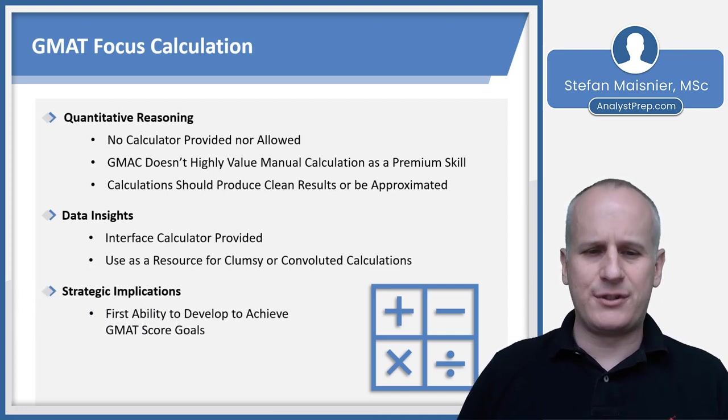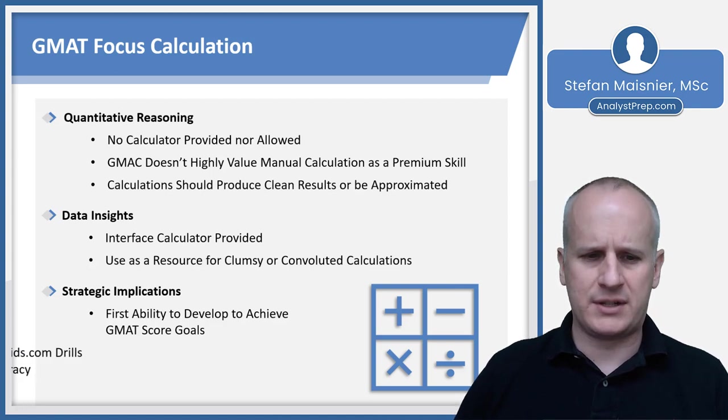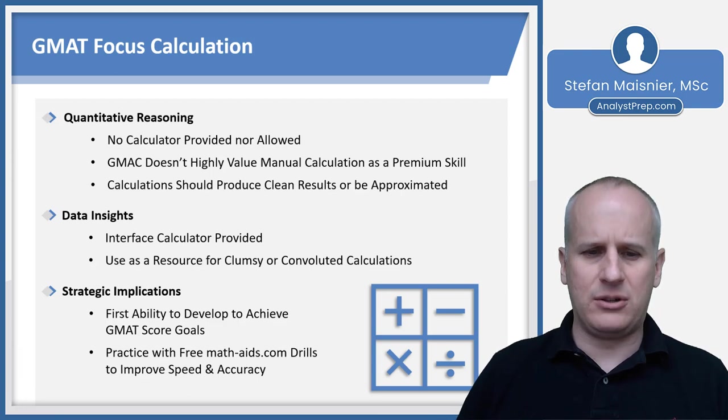So strategically, this is the first ability you'll need to develop to achieve your GMAT score goals because without a native expeditious ability to work through the math, you're really going to have a hard time achieving a score that is going to lead to ultimate admission success on the quantitative reasoning section. You can practice this skill with freely available tools on the internet at math-aids.com. If you're able to do your average calculation in closer to 10 seconds as opposed to 20 seconds, just by doing more drills, you will improve your ability to get through that quantitative reasoning section in an efficient manner.